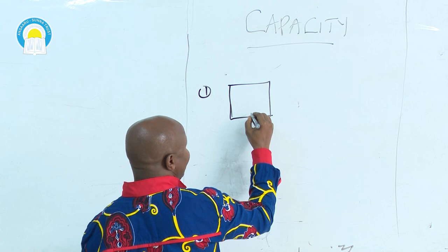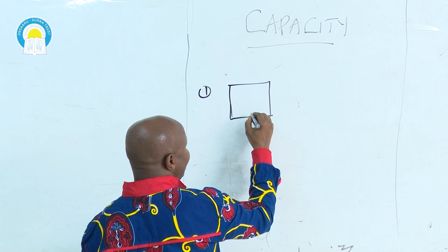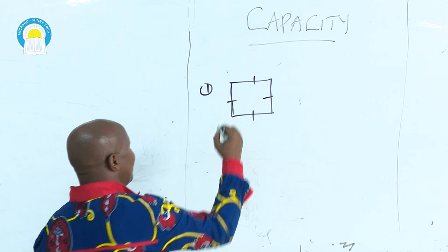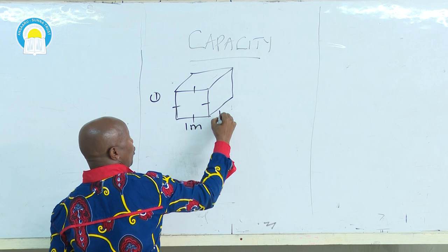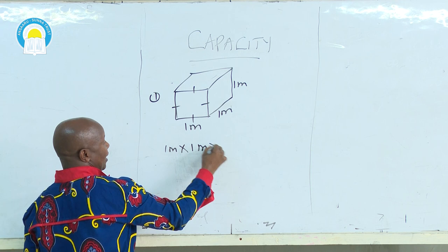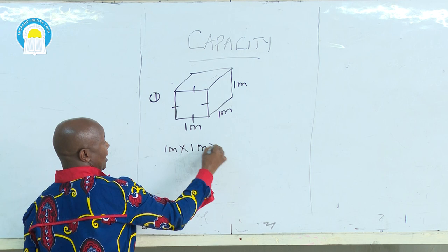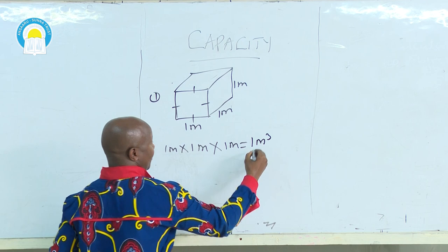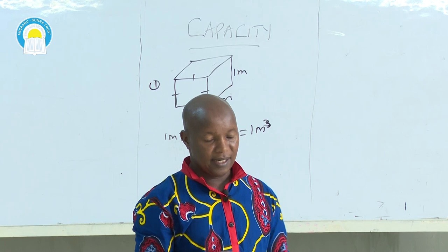The first example: you are given a cube. Remember I said yesterday, a cube — all sides are equal. So let our cube be 1 meter by 1 meter by 1 meter. The volume of this cube is length multiplied by width multiplied by height. So in our case, we have 1 meter × 1 meter × 1 meter, which equals 1 cubic meter. The volume of that cube is 1 cubic meter.